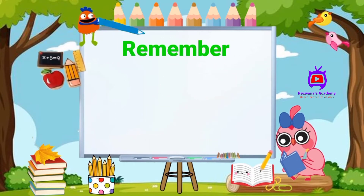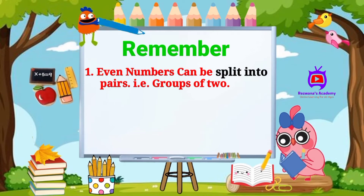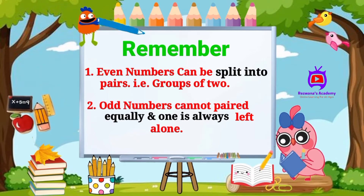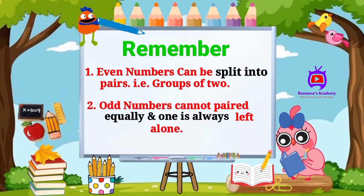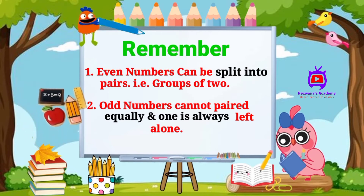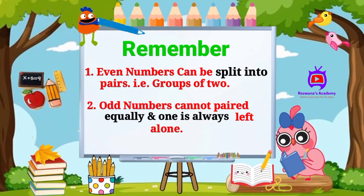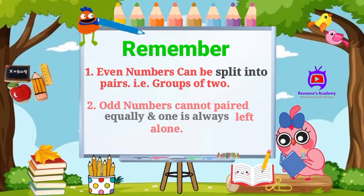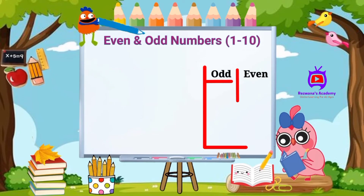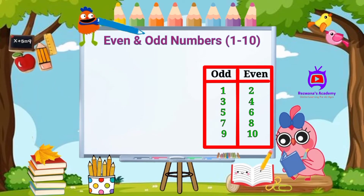Even numbers are the numbers that can be split into pairs, that is groups of two. Odd numbers cannot be paired equally and one is always left alone. Now let us look at each number from one to ten and identify even and odd numbers.